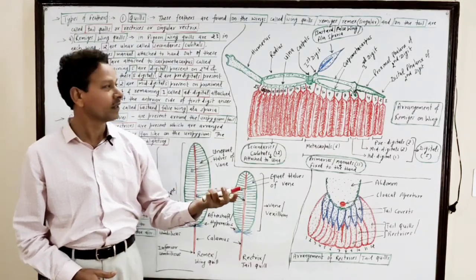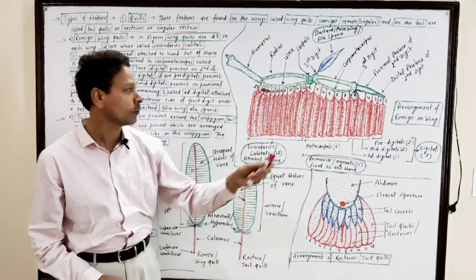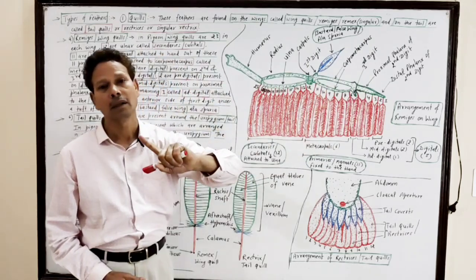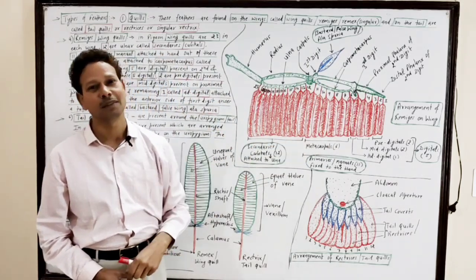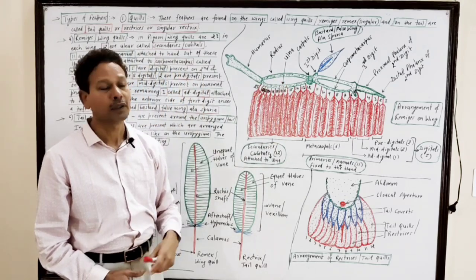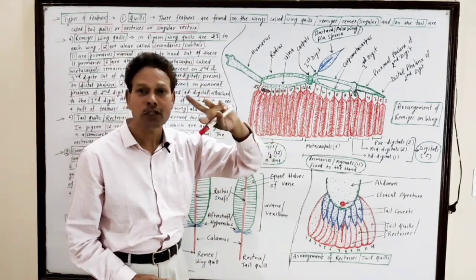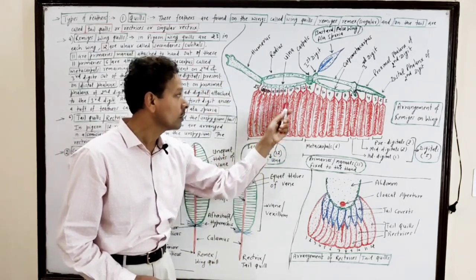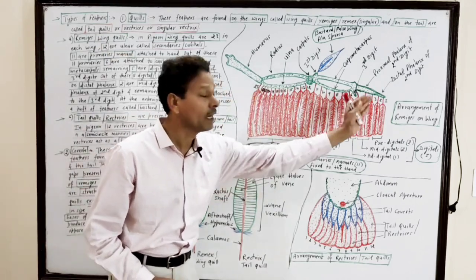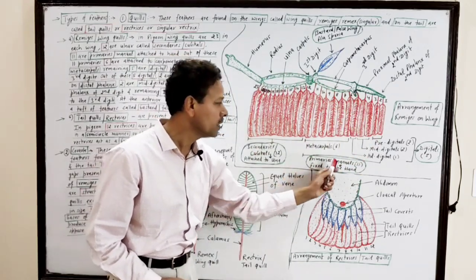The wing quills or ramages or ramex are 23 in number on each wing in the case of pigeon. Out of these 23, twelve are present on the ulna bone — these are called secondaries or cubitals. The remaining 11 are attached to the hand region and are called primaries or manuals.